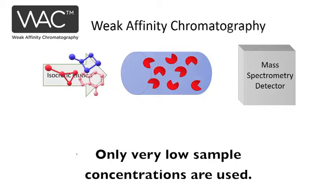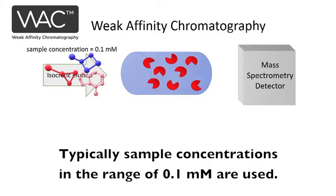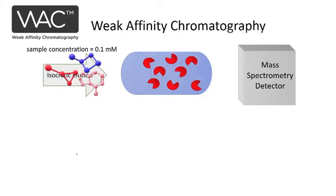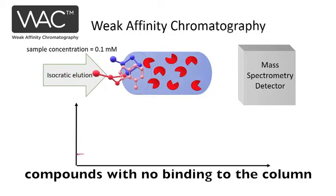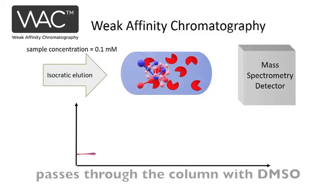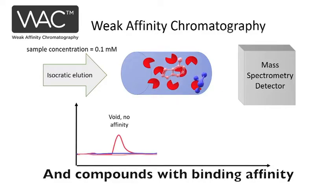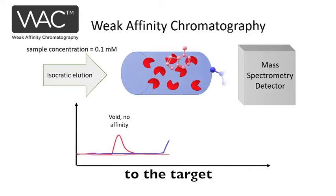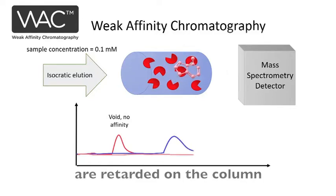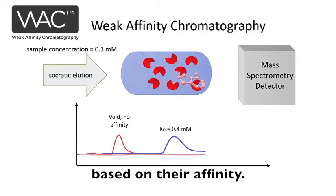Only very low sample concentrations are used — typically in the range of 0.1 millimolar. During screening, compounds with no binding to the column pass through the column with DMSO in the void, and compounds with binding affinity to the target are retarded on the column based on their affinity.